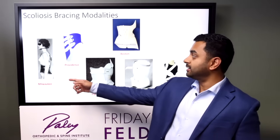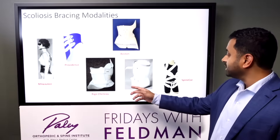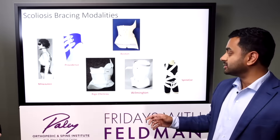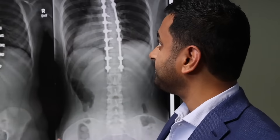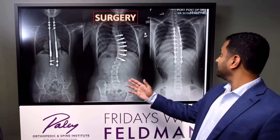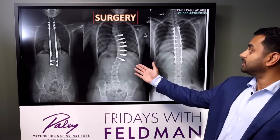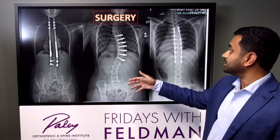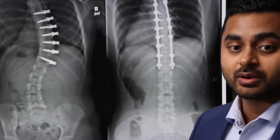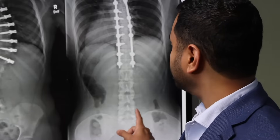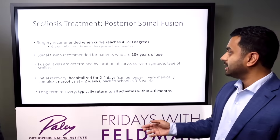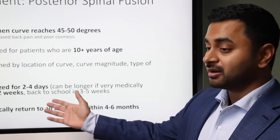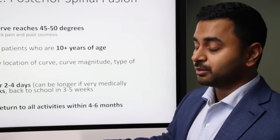Modern braces use 3D-printed technology and are much smaller than the old-fashioned ones you might have seen in movies. We also do specific therapy called Schroth therapy, which is super important for improving balance and can even help with the curve itself. Then finally there's surgery — the tried-and-tested spinal fusion, vertebral body tethering which goes through the side and allows the patient to grow with some motion, and magnetically controlled growing rods for very young children. Surgery is generally considered when the curve exceeds 50 degrees.